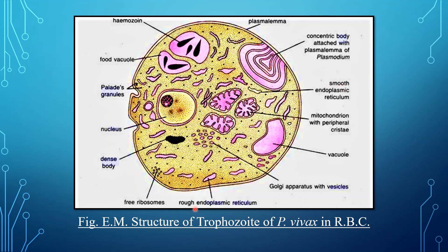It contains several smooth endoplasmic reticulum and rough endoplasmic reticulum, which are not well developed. They are loosely scattered throughout the cytoplasm. The trophozoite also contains several mitochondria, which contain peripheral crystalline structures.